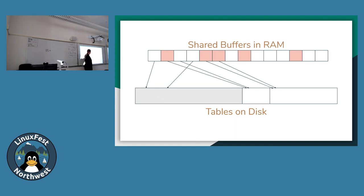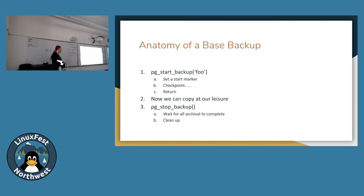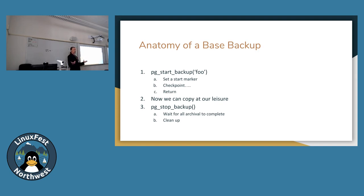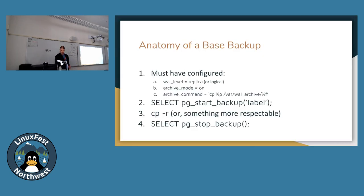While the checkpoint happens, it could be instantaneous or take a few minutes depending on how much RAM you have set aside and how many changes you've made. The key is you're not allowed to start the backup process and start copying until it returns and says all the stuff in RAM has been written. Once that returns, you're able to start copying those files at your leisure — you can use whatever mechanism you want: a local copy, an rsync to another system, anything like that. You can take as much time as you want and at no point do you stop taking write traffic. This is all online.